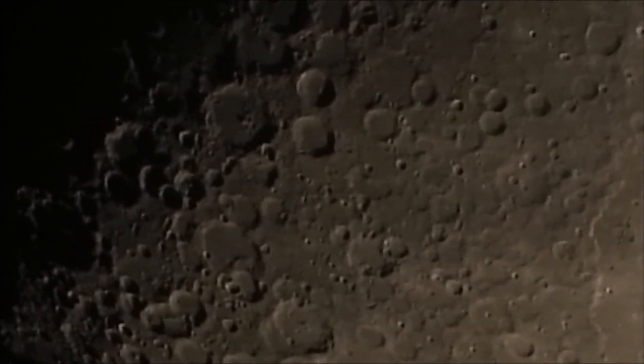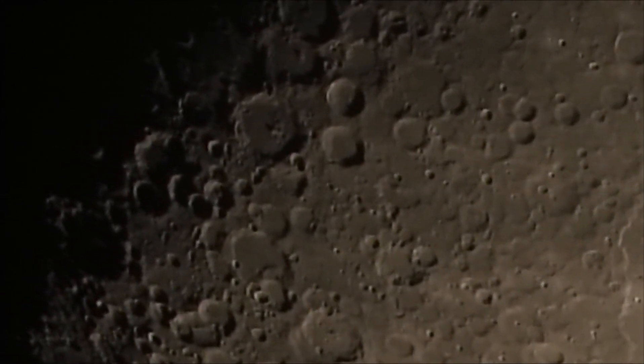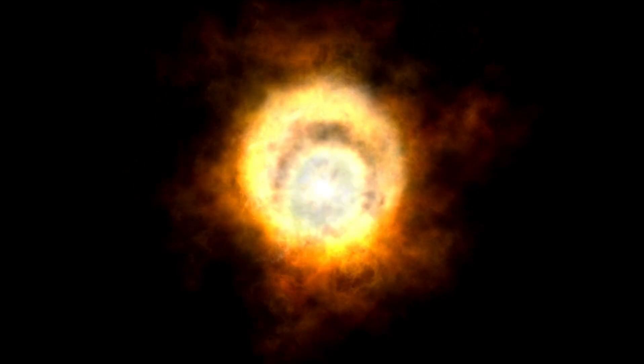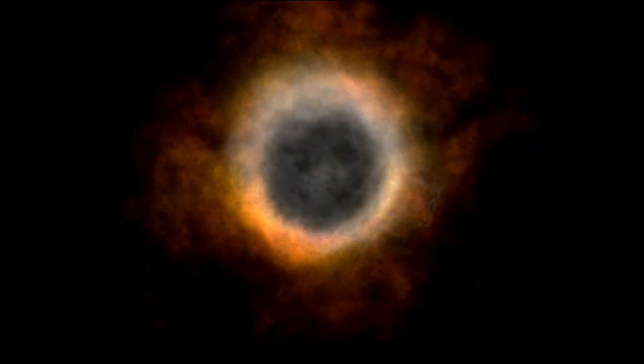Hubble frequently applies this technique to study exoplanet atmospheres by observing distant stars as planets transit in front of them. Since the Sun is too bright for Hubble to observe directly, using the Moon as a reflector enabled scientists to obtain the data they needed.